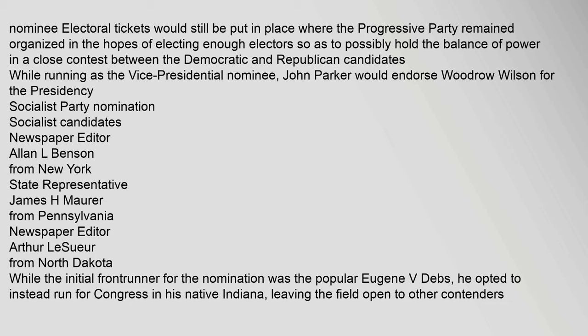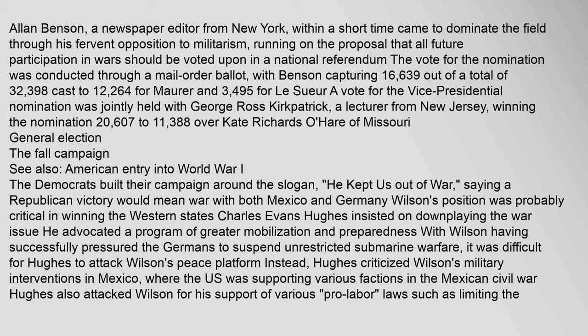Socialist candidates included newspaper editor Alan L. Benson from New York, State Representative James H. Maurer from Pennsylvania, and newspaper editor Arthur Lesseur from North Dakota. The initial frontrunner Eugene V. Debs opted to run for Congress in Indiana instead. Alan Benson came to dominate the field through his fervent opposition to militarism, proposing that all future participation in wars be voted upon in a national referendum. The vote for nomination was conducted through a mail-order ballot, with Benson capturing 16,639 of 32,398 votes cast. George Ross Kirkpatrick won the vice presidential nomination 20,607 to 11,388 over Kate Richards O'Hare.